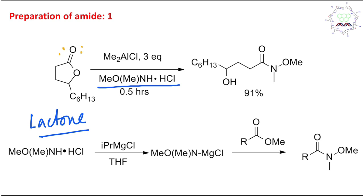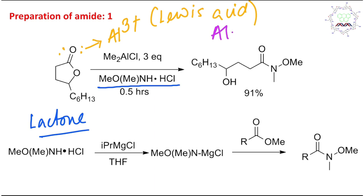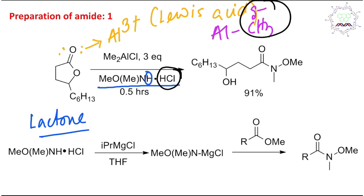First, the aluminium center acts as a Lewis acid and can coordinate to the ester carbonyl oxygen, activating it. Second, the aluminium-methyl bond has a delta-negative methyl (carbanion type) which acts as a base, consuming first the HCl proton and then the NH proton, driving the reaction forward. This reaction happens so smoothly that within 30 minutes, 91% yield is obtained.